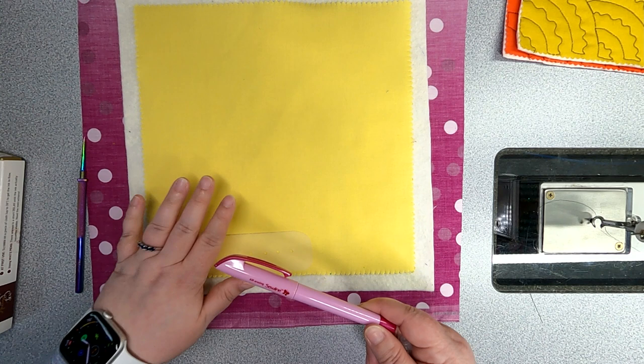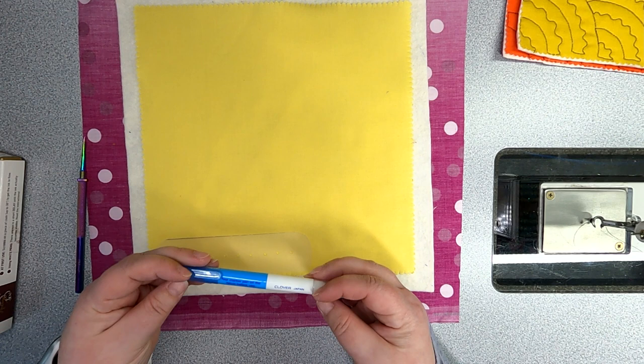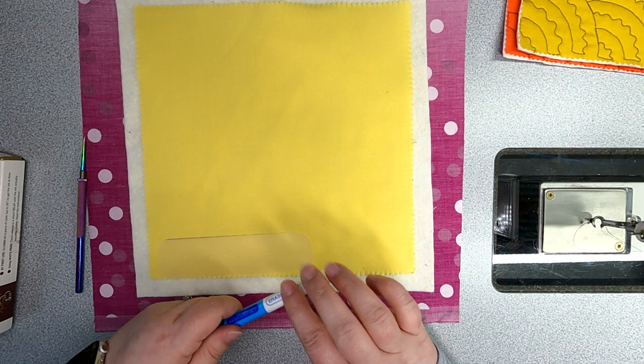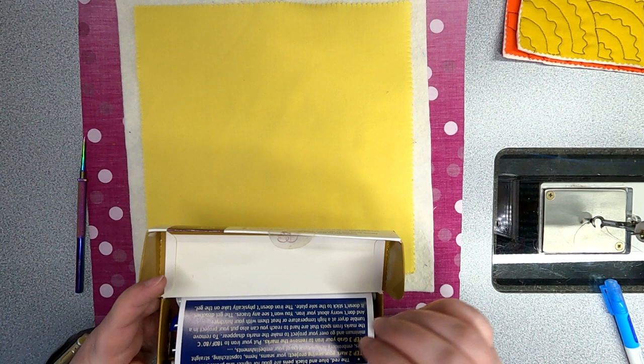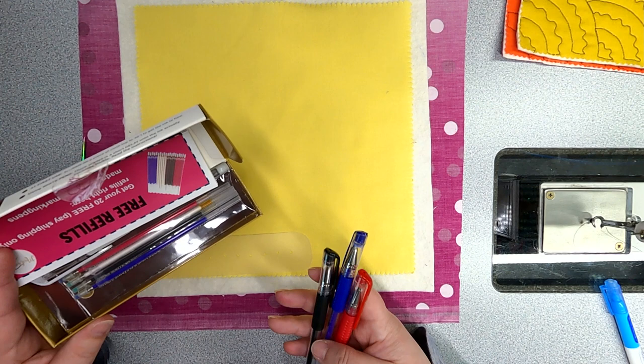That leaves us with water erasable which is always a really reliable option. I like this Clover one but I know there are many other brands. There are also these heat erasable pens which are new to me. I just bought these and I thought we'd give them a try. There's a couple colors in here so why don't we use these three and see which one works the best and see if they actually do erase with iron.